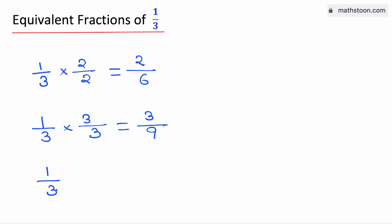And to get the third equivalent fraction of one-third, we will multiply both the top and the bottom by 4. As a result, we get 1 times 4 in the top, which is 4, and 3 times 4 in the bottom, which is 12.